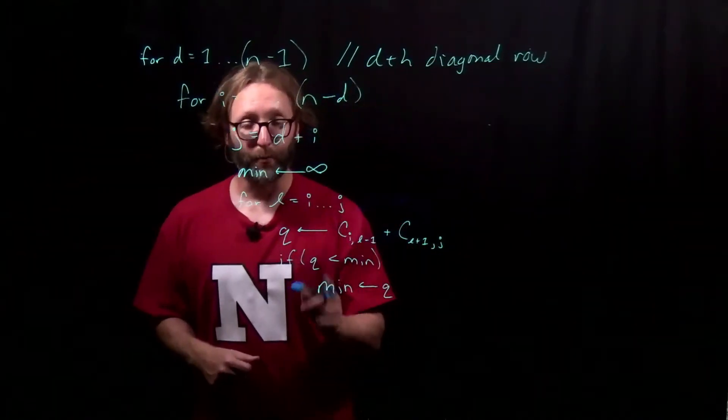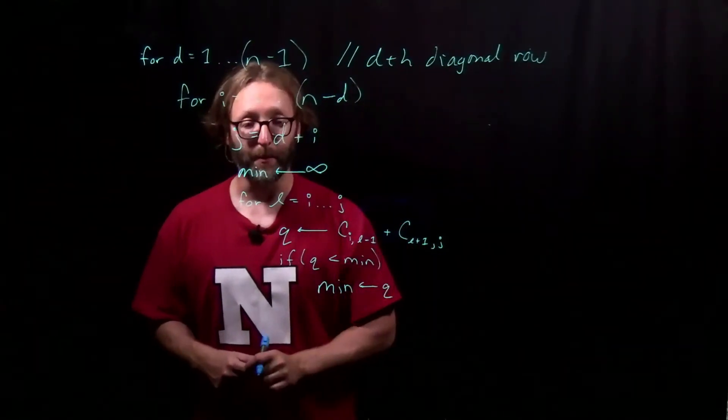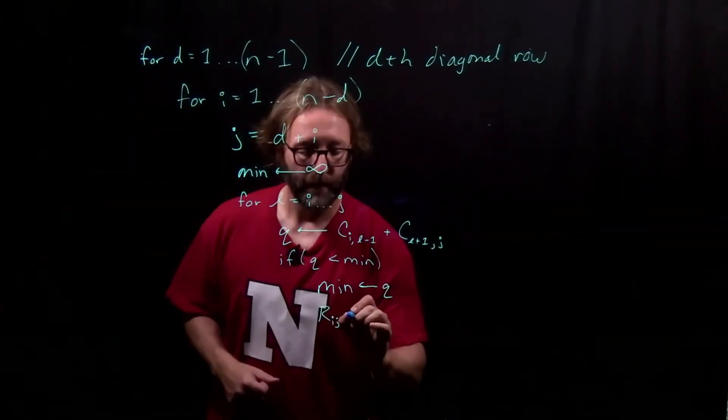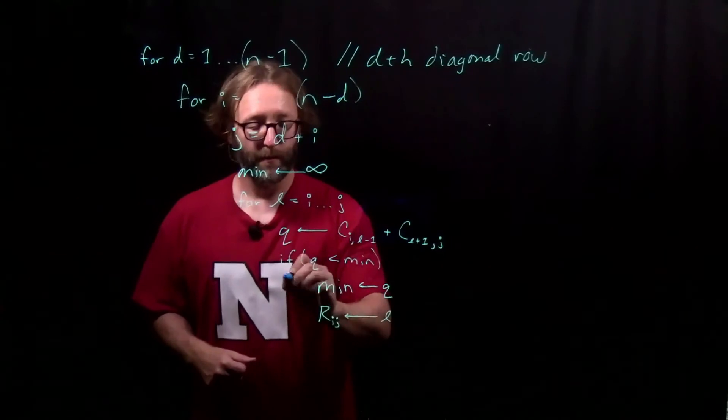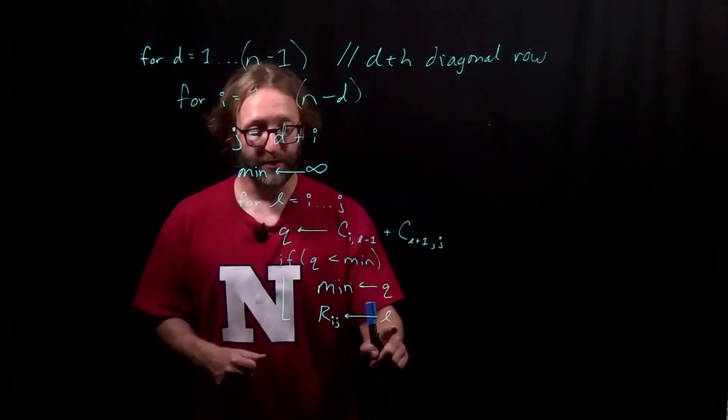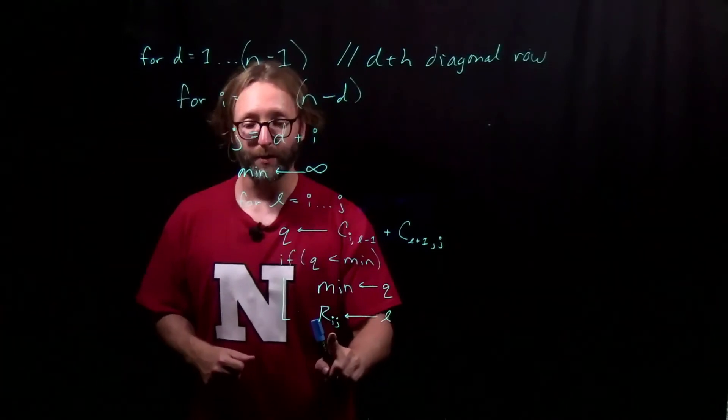We also need to keep track of the root value that gave us this minimum, l. Whichever value ends up as the minimum will correspond to l, which is stored off in our root table.